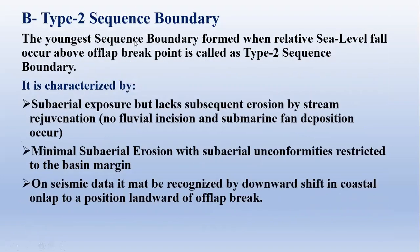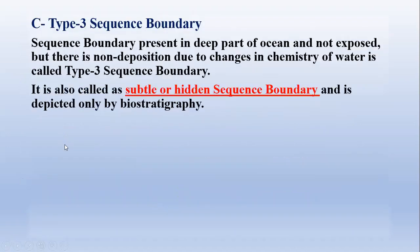Type 2 sequence boundary is the youngest sequence boundary, which forms when the relative sea level fall occurs above the off-lap breakpoint. It is characterized by sub-aerial exposure but with stream rejuvenation rather than fluvial incision, no submarine fan deposition, and minimal sub-aerial erosion with sub-aerial unconformity restricted to the basin margin. On seismic data it may be recognized by the downward shift in coastal on-lap landward of the off-lap break.